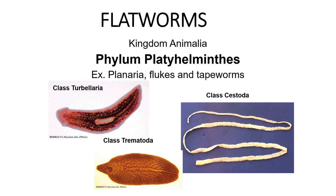Platyhelminthes — inko flatworms bhi kaha jata hai. In common language, flatworms — flat, jaisa naam se hume vidit ho raha hai, they are flat. The very good examples from kingdom Animalia include Planaria, liver flukes, other types of flukes, and tapeworms. All these animals come under phylum Platyhelminthes.